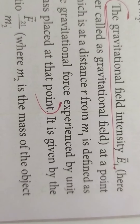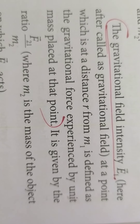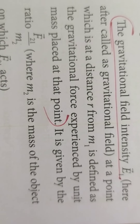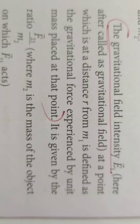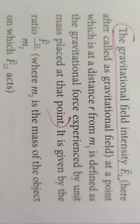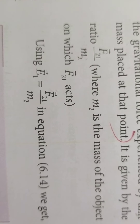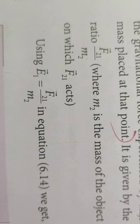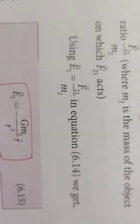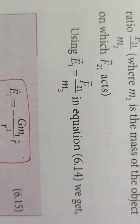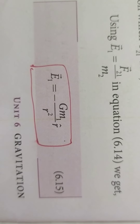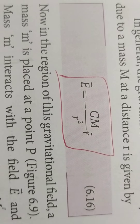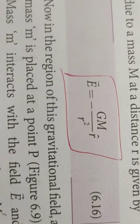In general, you can define gravitational field as the gravitational force experienced by unit mass placed at that point. You can write the ratio F21 vector by M2, because M2 is the mass of the object on which this force acts. So E1 vector is equal to F21 vector divided by M2. M2 cancels, so E1 vector equals minus G·M1 divided by R² into R-cap. In general, you can write this as E vector equals minus G·M divided by R² into R-cap.